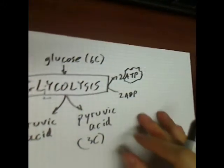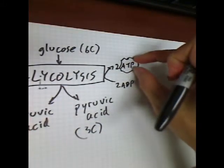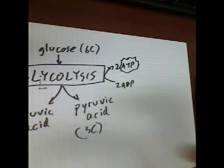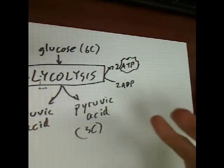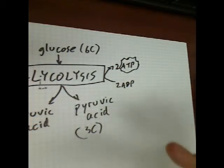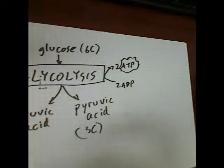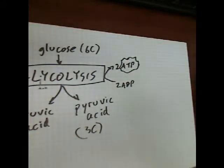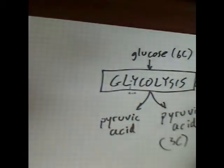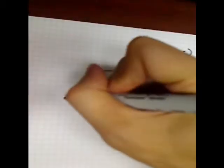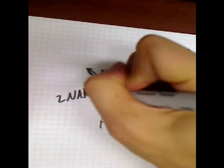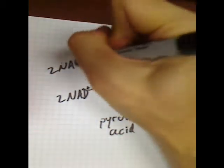Actually, glycolysis uses a couple of ADPs but produces four, so we net two ATPs. Since this is just an introductory biology lecture and not a biochemistry class, I'm not going to go into full detail, but I encourage you to look up glycolysis and read through some of the actual reaction descriptions — it's kind of interesting and gives you a better idea of what's going on. Anyway, we get to make two ATPs, and we're also going to turn two NADs into two NADHs.